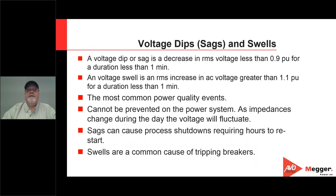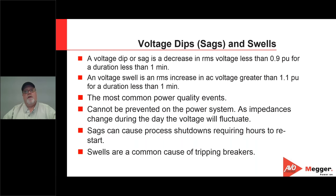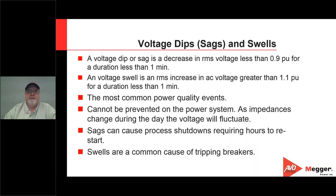A voltage swell is basically when the voltage increases to 110% or 1.1 per-unit above nominal for less than one minute. So when we look at under-voltage and over-voltage conditions, these last longer than a minute. Dips, SAGs, and swells last less than a minute. SAGs and dips are your most common power quality events — they cannot be prevented because as impedances change on your system during the day from loads being turned on and off, you're going to see them occur.